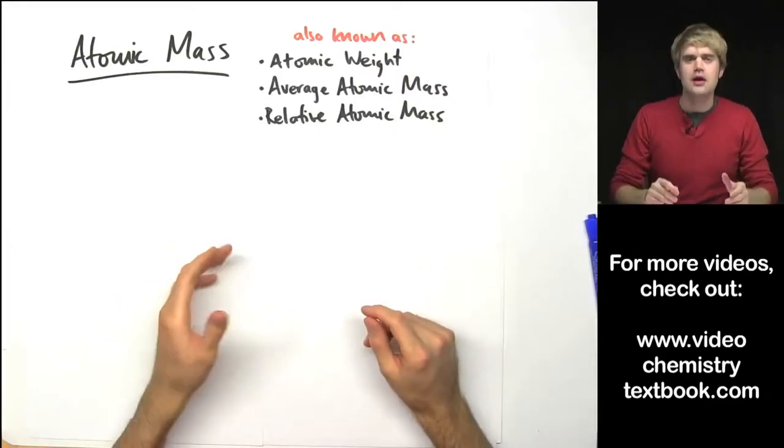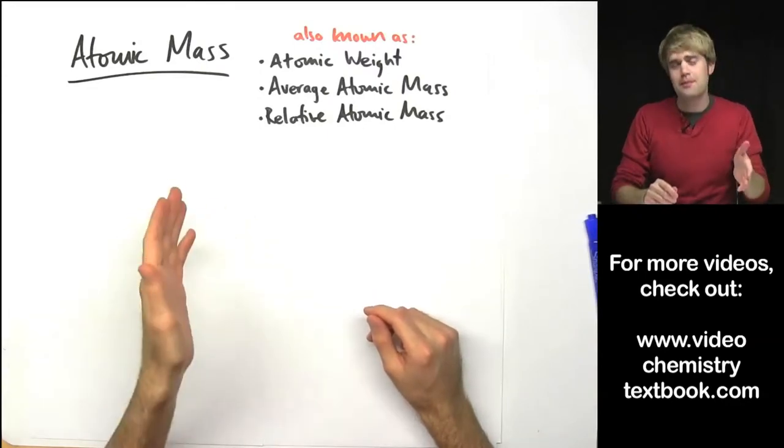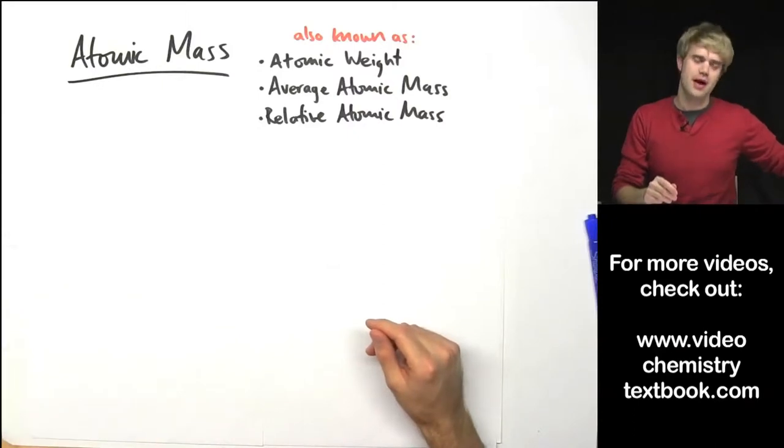Atomic mass is a really important characteristic for elements. Each element like copper, oxygen, sulfur, and so forth, each element has its own atomic mass.